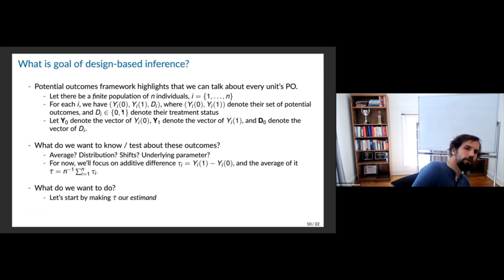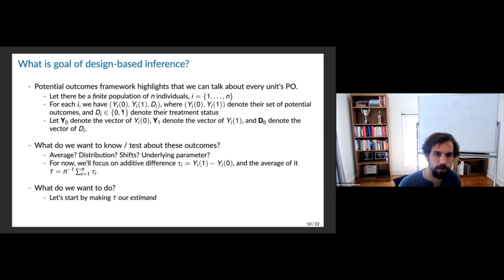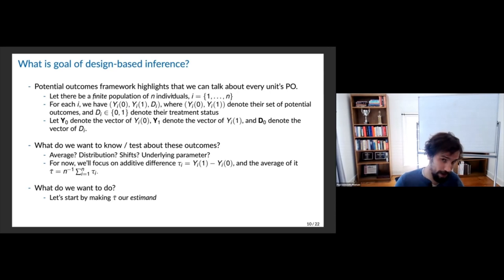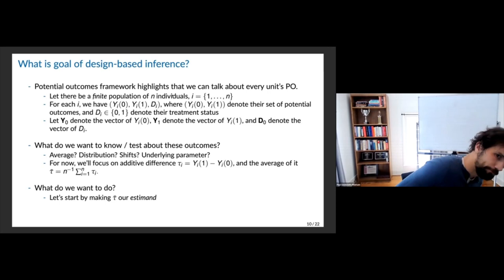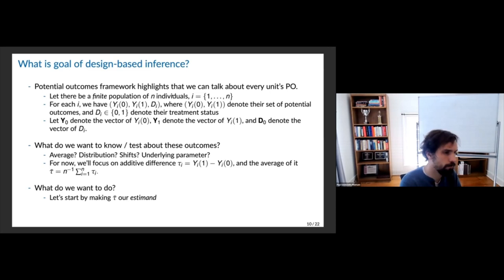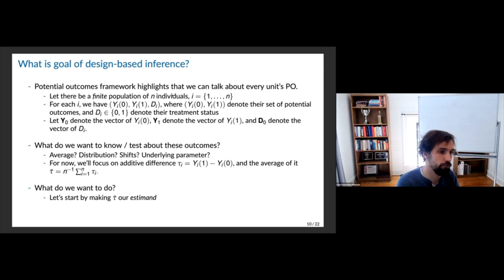Let me give some notation. In the potential outcomes framework, we talk about every unit's potential outcome. There's a finite population of n individuals. For each person we have their two potential outcomes and their treatment — we'll deal with binary treatments, though this extends to multi-valued treatments. In bold-face vector notation, D-bold is the vector of treatment assignments across the n individuals, an n-by-one vector. D_0 denotes the vector of treatment assignments across the n individuals.